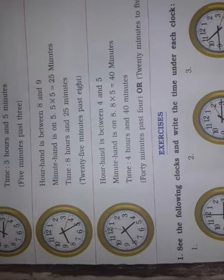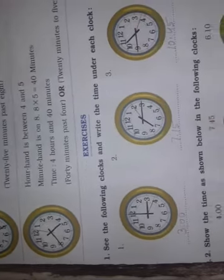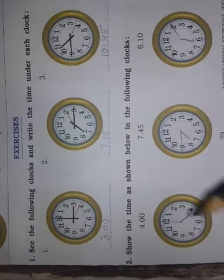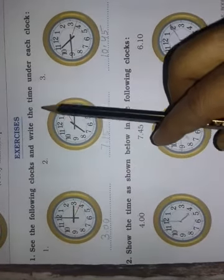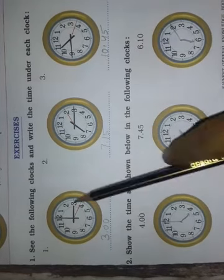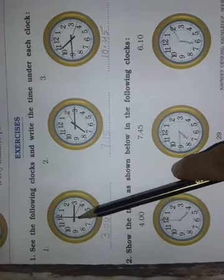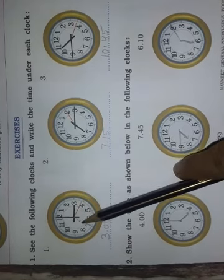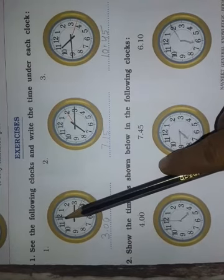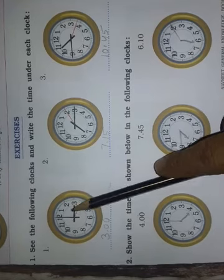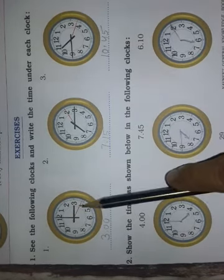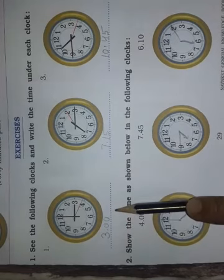Now look at the exercise: see the following clock and write the time under it. The hour hand is on 3 and the minute hand is on 12. Since 12 times 5 equals 60, that means the hour is complete, so the time is 3 o'clock.